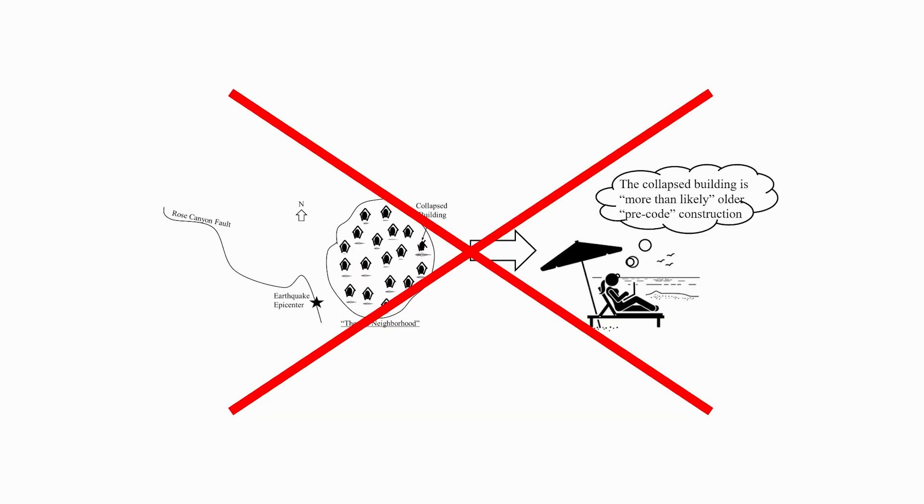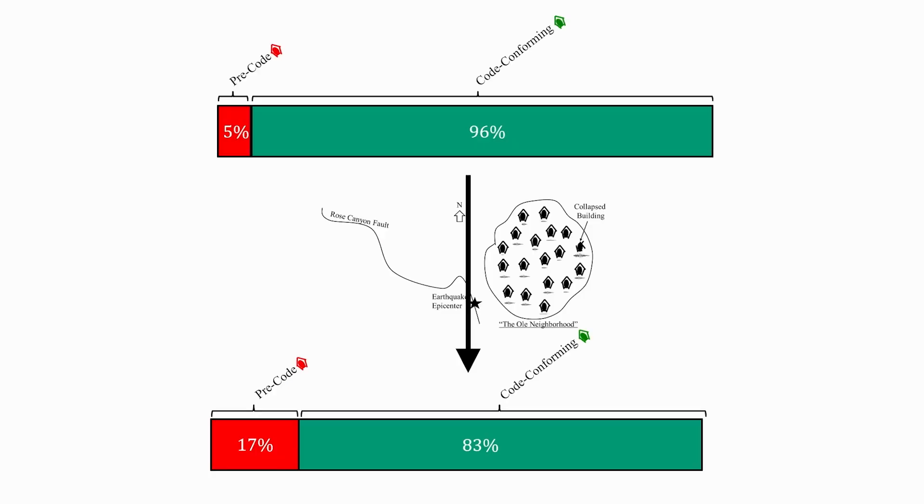So the key takeaway here is that new evidence, which in this case is the fact that an earthquake occurred and caused the building to collapse, should not completely determine your beliefs in a vacuum. It should update your prior beliefs. Now what does that have to do with Bayes rule?